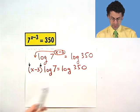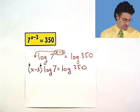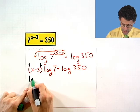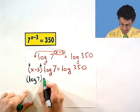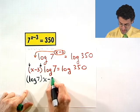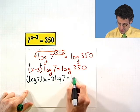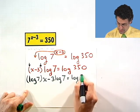Now, how am I going to solve this? Well, I want to solve this for x and so I can now distribute the log 7 everywhere. And I'd see log 7 times x minus 3 log 7 equals log 350.